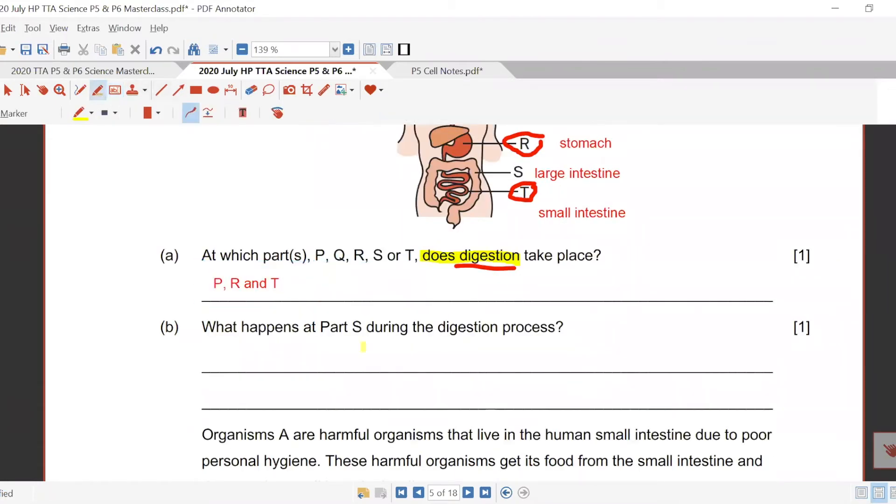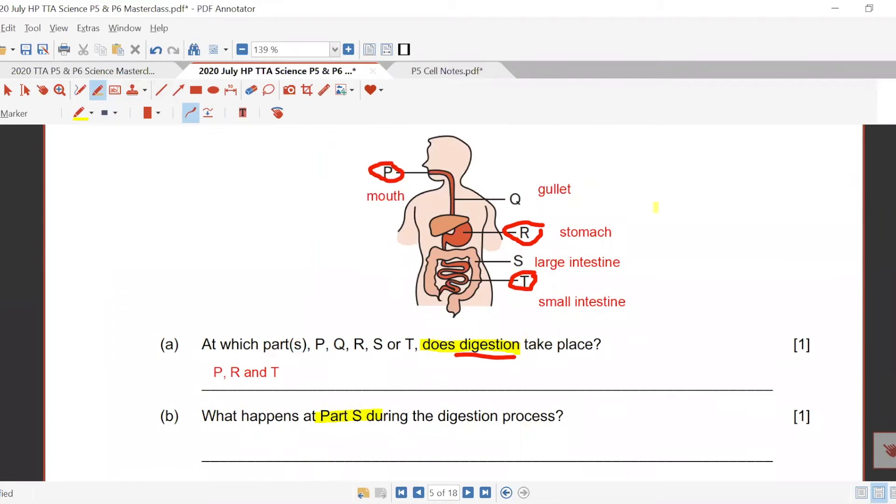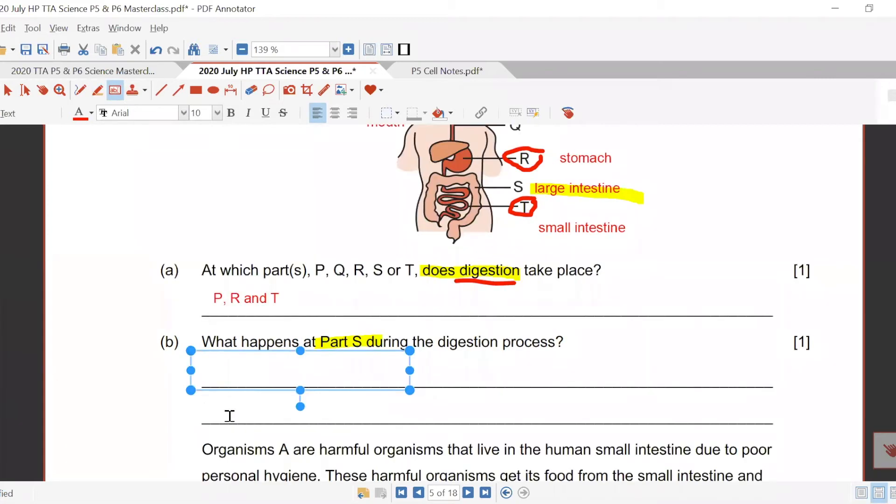So what happens at S during digestion process? Large intestine, what's happening here? Absorption of water and minerals. Absorption of water, but you have some words missing. But good try.